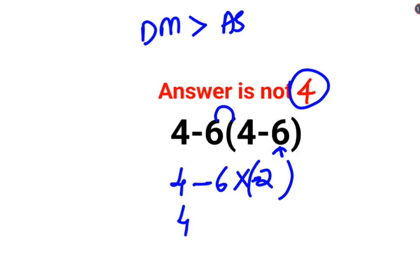And since 6 was negative so final answer should have a negative sign. So minus 6 multiplied by minus 2 is plus 12. So answer for this question is supposed to be 16.